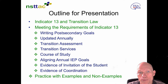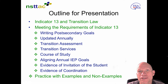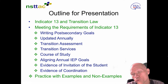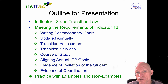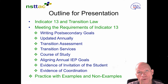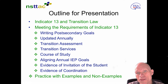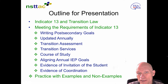We're going to look at these eight requirements: post-secondary goals, which are specifically about what happens after school, not during school. They must be updated annually and based on transition assessment data. There must be services associated with those goals, a course of study aligned to those goals, IEP goals aligned to the transition goals, evidence the student was invited to the meeting, and evidence of coordination with outside agencies.